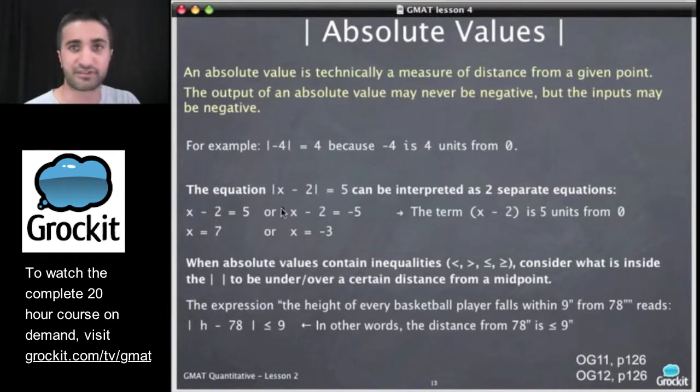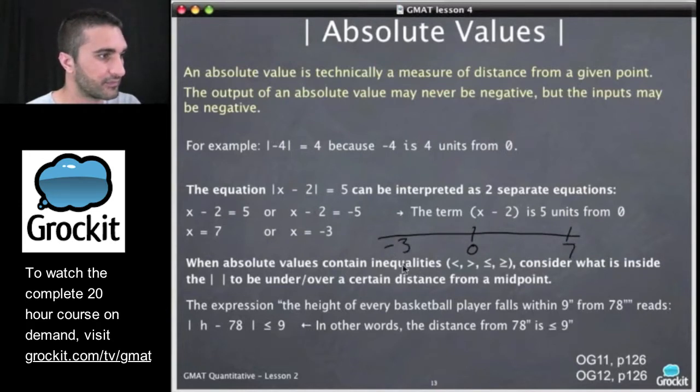So in this equation, the absolute value of x minus two equals five. This can be interpreted as two equations. One is that x minus two equals five. The other is that x minus two equals negative five. Let's take a look at the number line. Let's put zero here. And we end up with these values of x equals seven and x equals negative three because the equation is saying that x minus two should be either at negative five or at five.